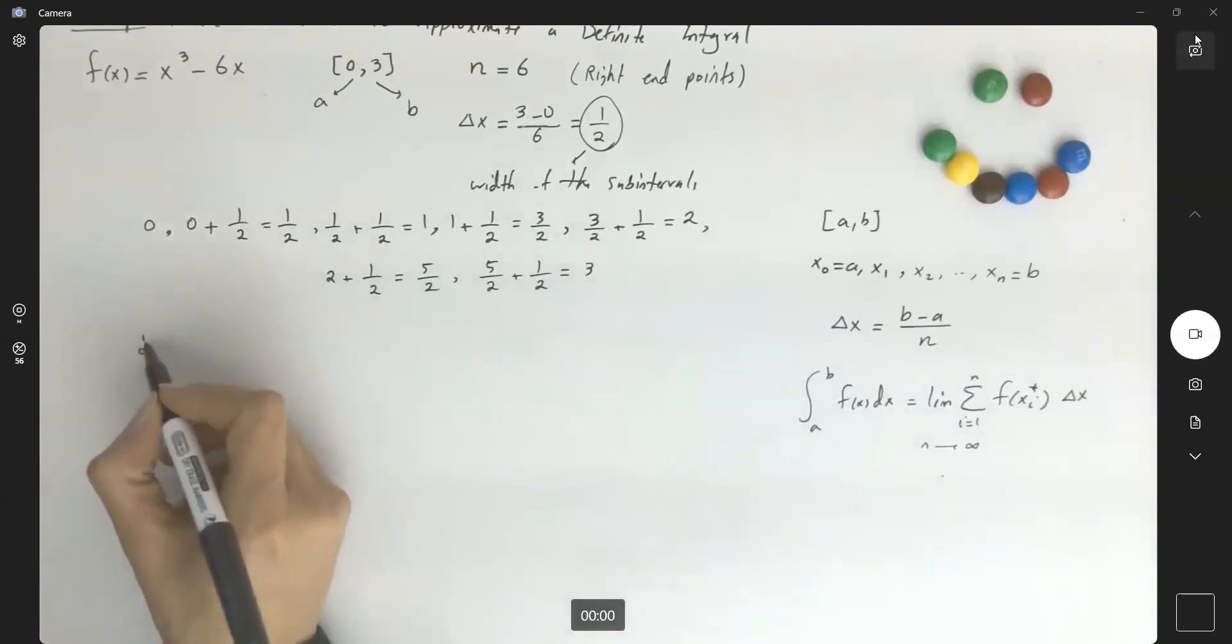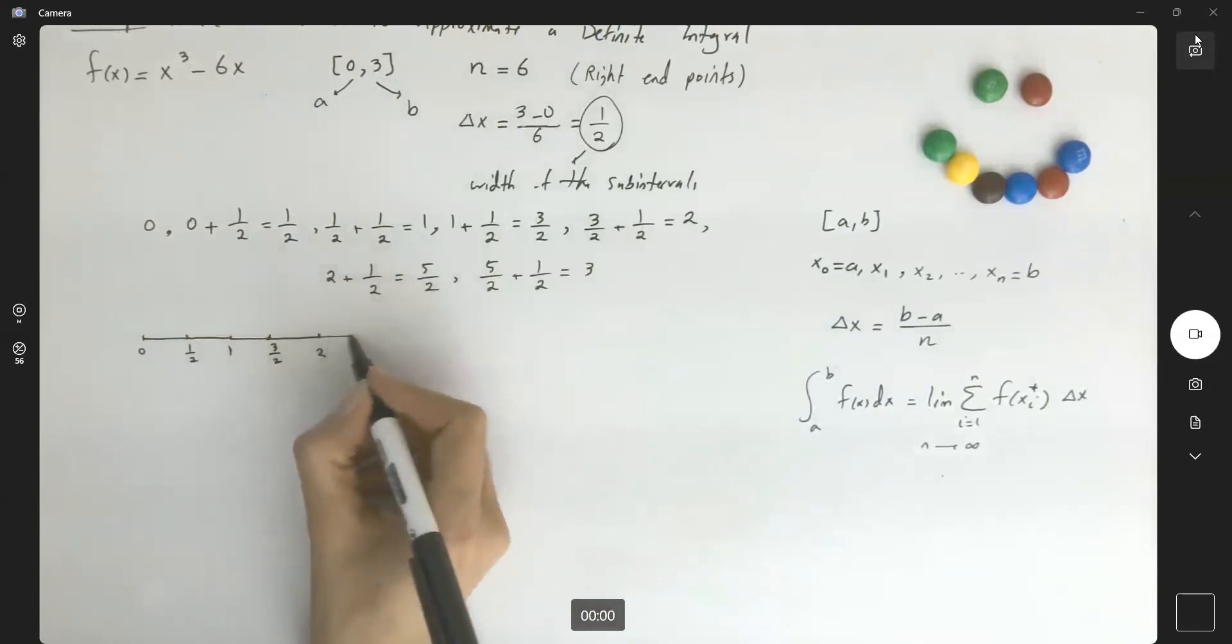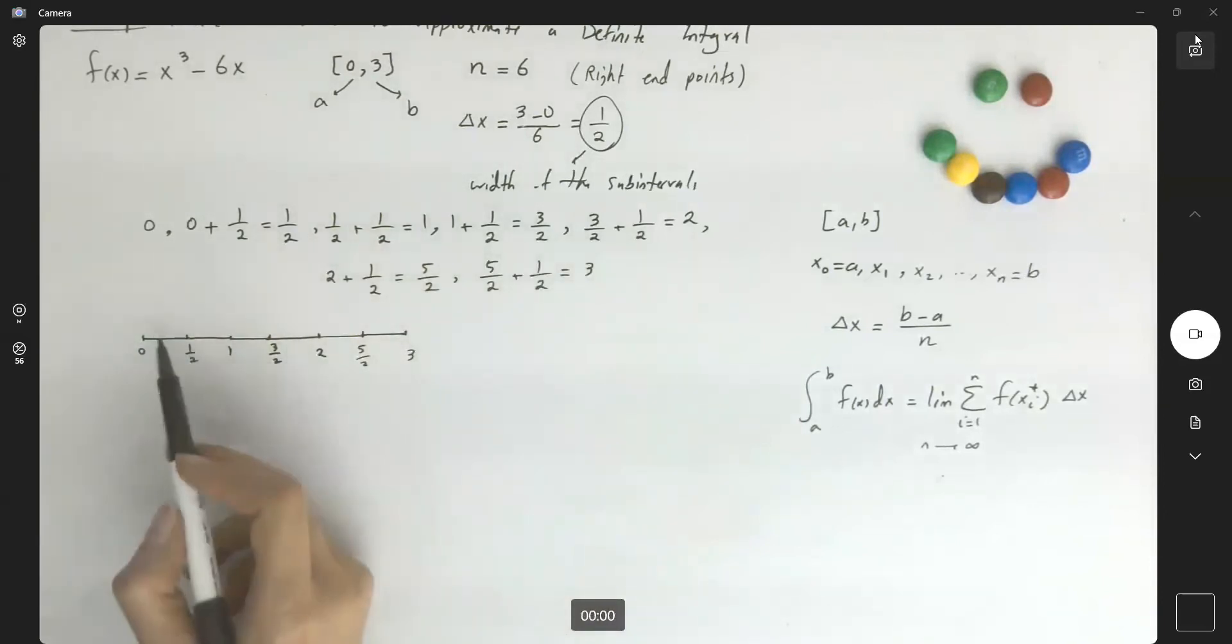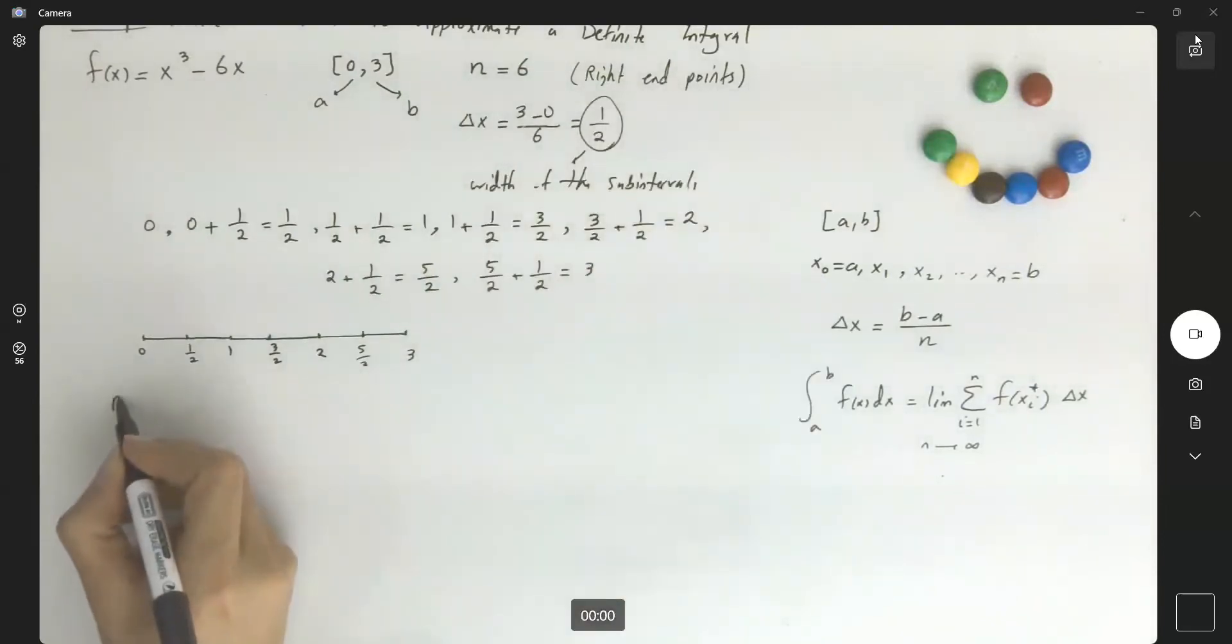Starting at 0, stopping at a half. Starting at a half, stopping at 1. Starting at 1, stopping at 3 halves. Starting at 3 halves, stopping at 2. Starting at 2, stopping at 5 halves. Starting at 5 halves and stopping at 3. These are your 6 subintervals. Now let's take a look at this. Here we're going to use the Riemann sum for the right endpoints. So R sub 6 is equal to...